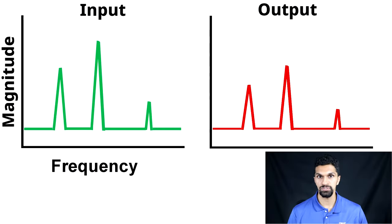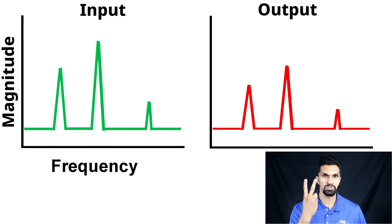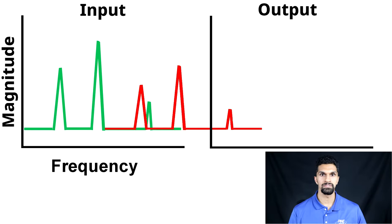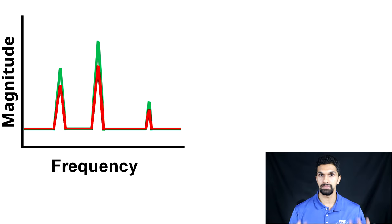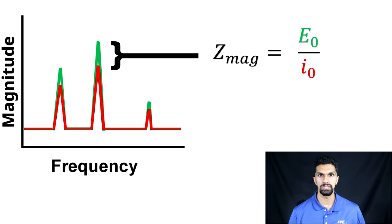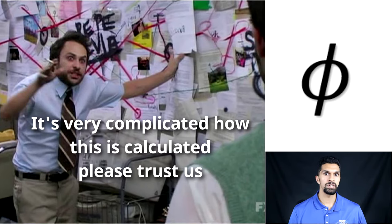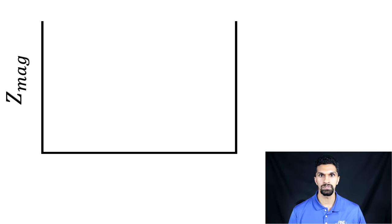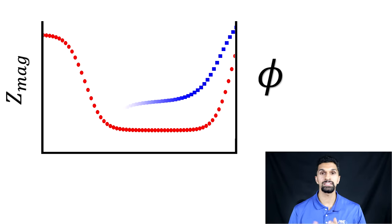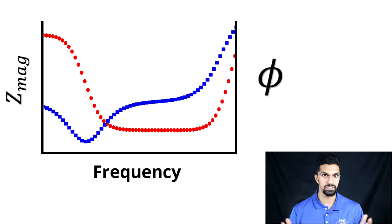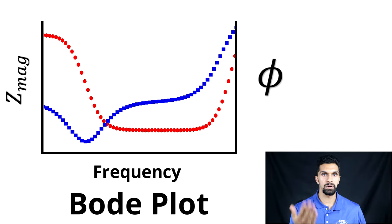The fast Fourier transform provides us with two measurables: the magnitude of the impedance, which is a ratio of the potential and current amplitudes, and the phase angle. If we plot the magnitude of the impedance and the phase angle as a function of frequency, we get what's known as a Bode plot — one representation of the impedance data.